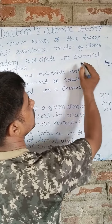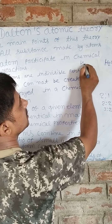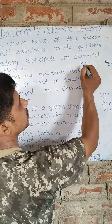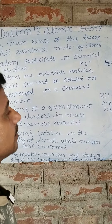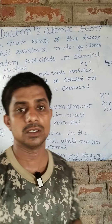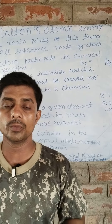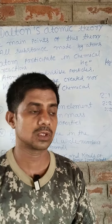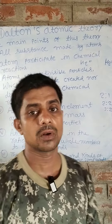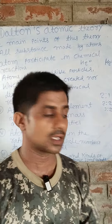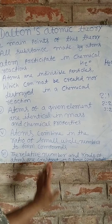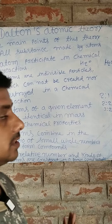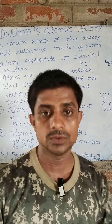For example, water H2O consists of 2 atoms of hydrogen and 1 atom of oxygen, forming a compound with a constant ratio. Thank you.